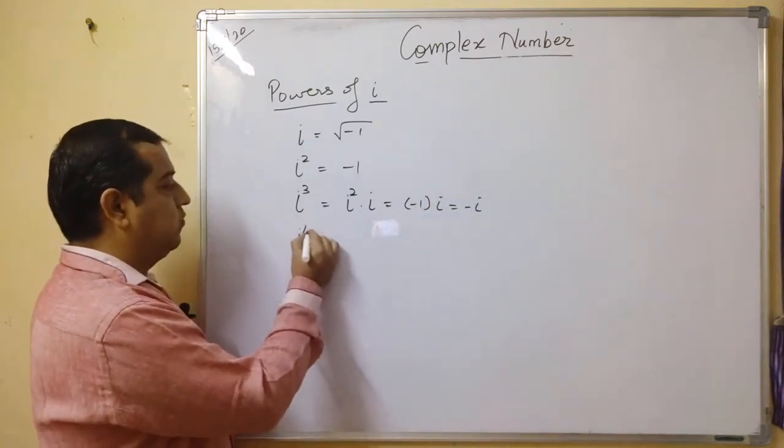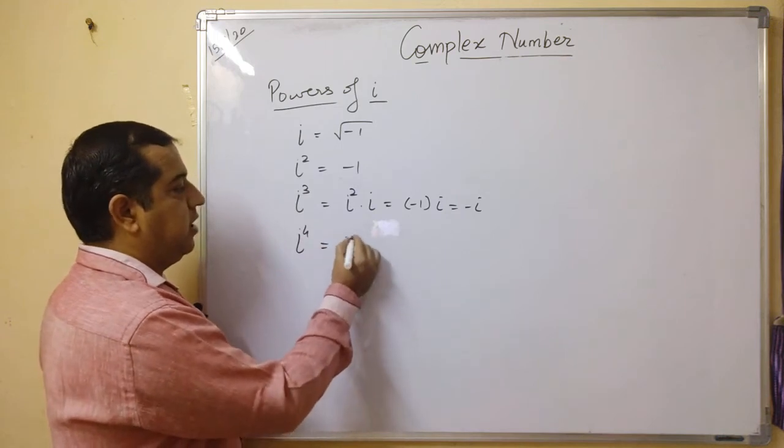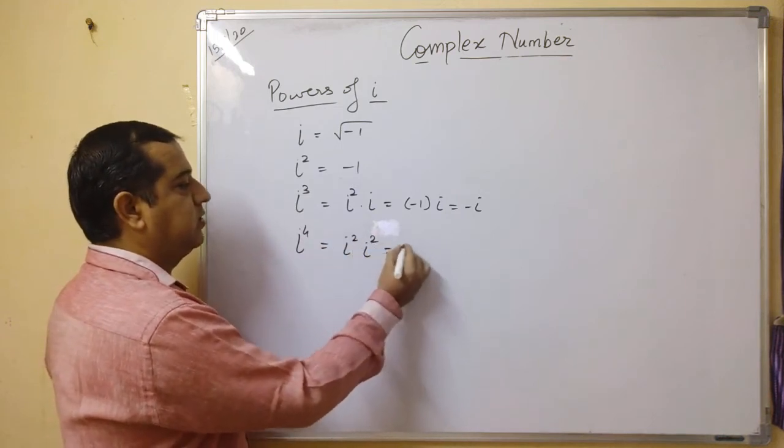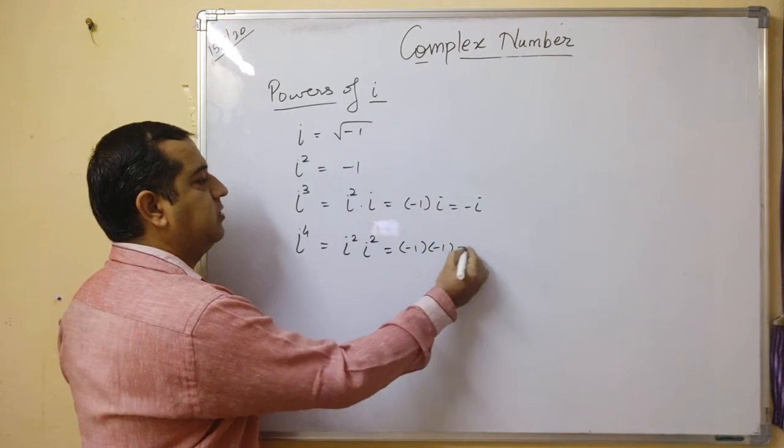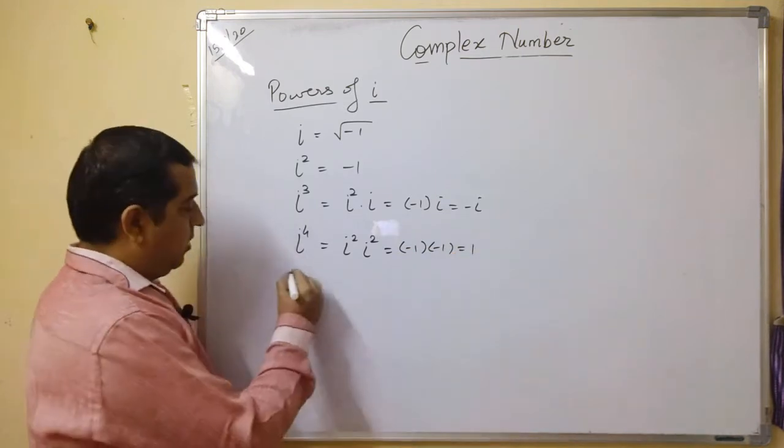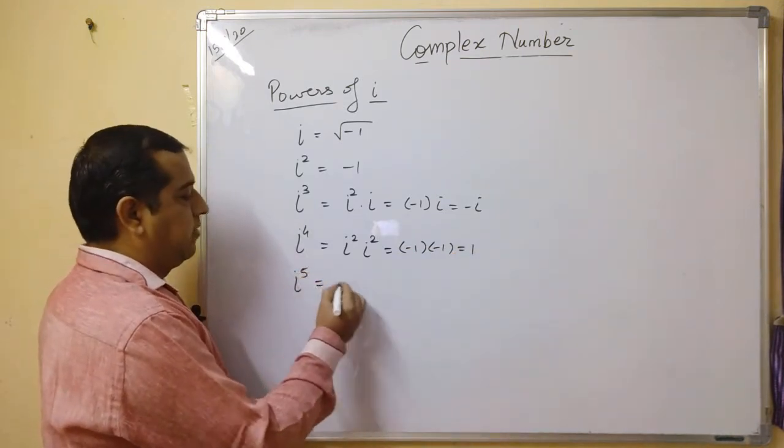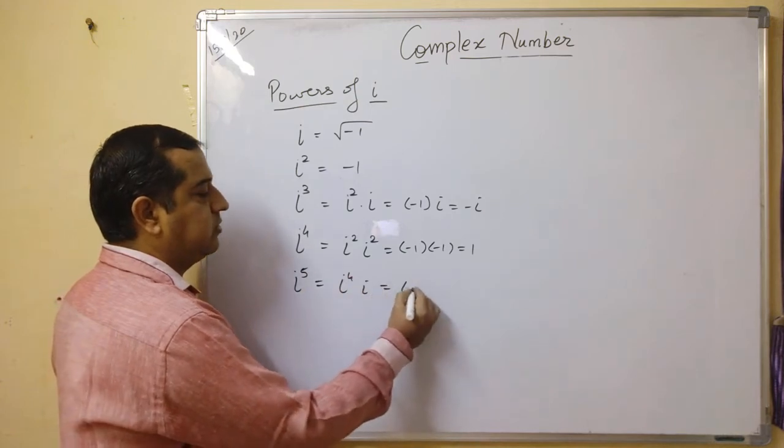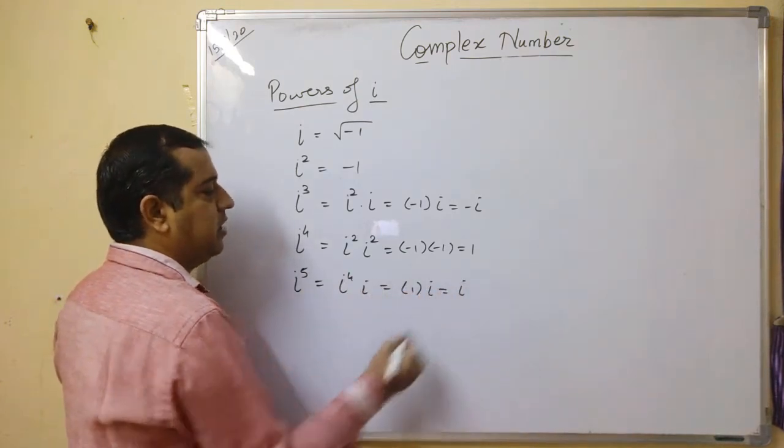And when you come to i⁴, it is i² times i², which is -1 times -1, which is 1. When you come to i⁵, you get i⁴ times i, which is 1 times i, which is i.